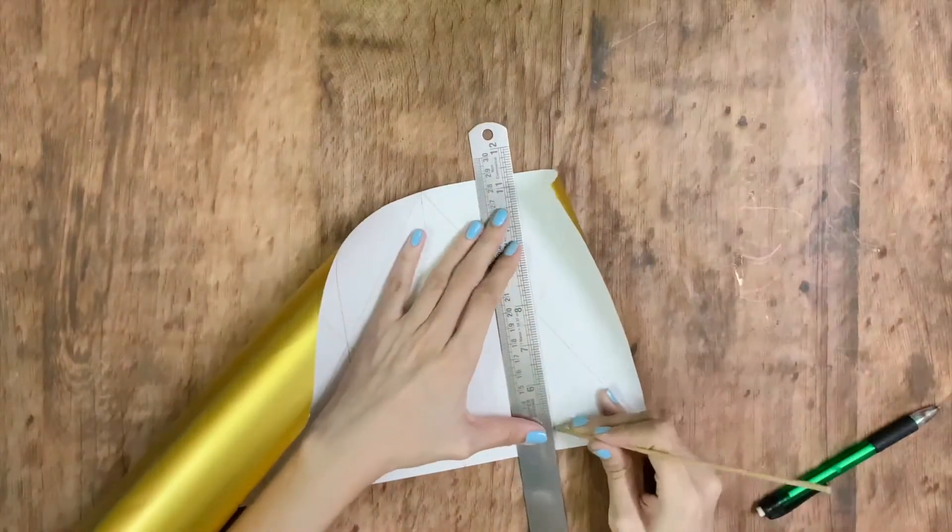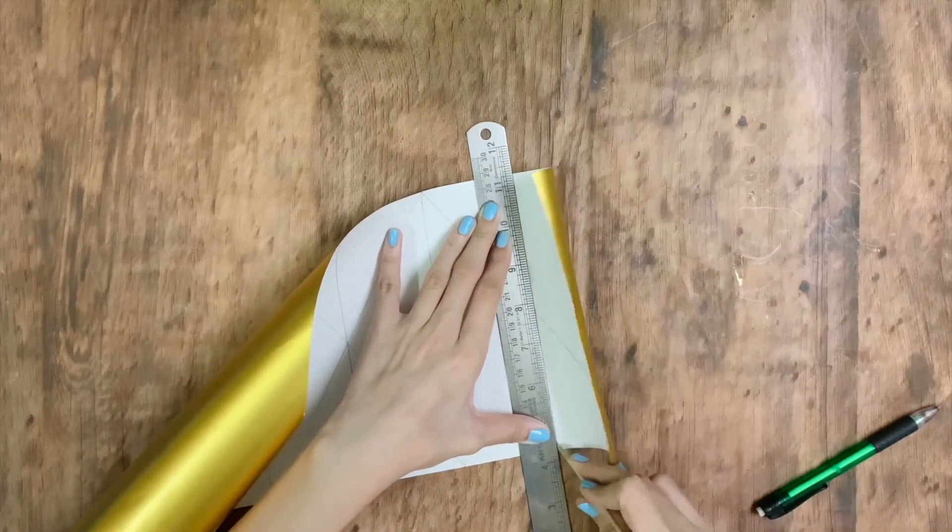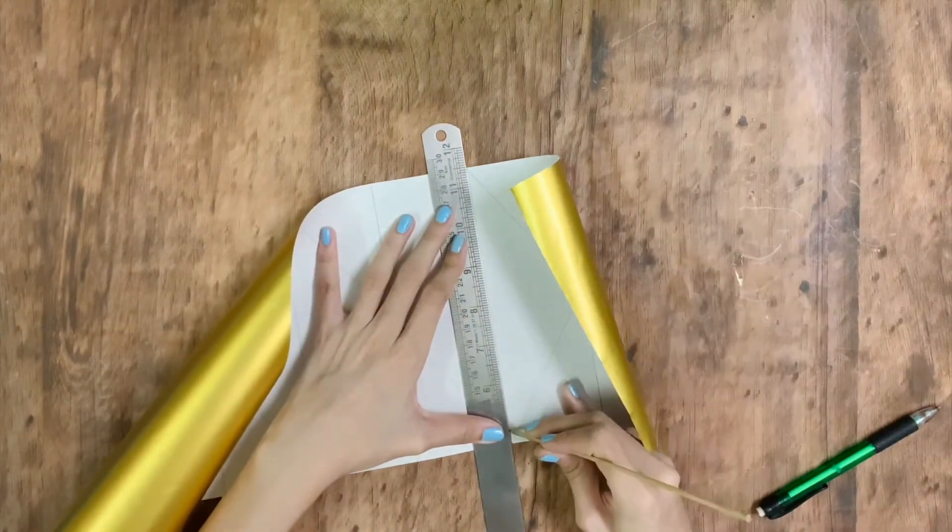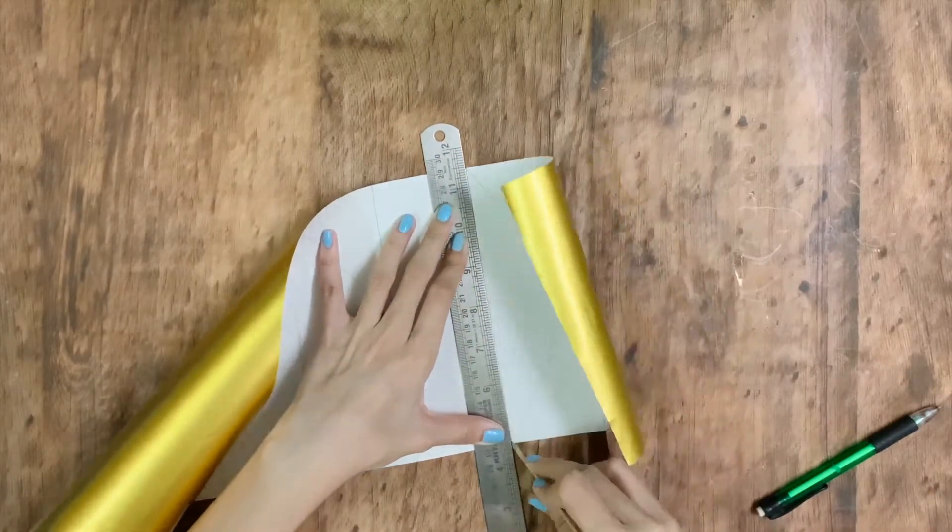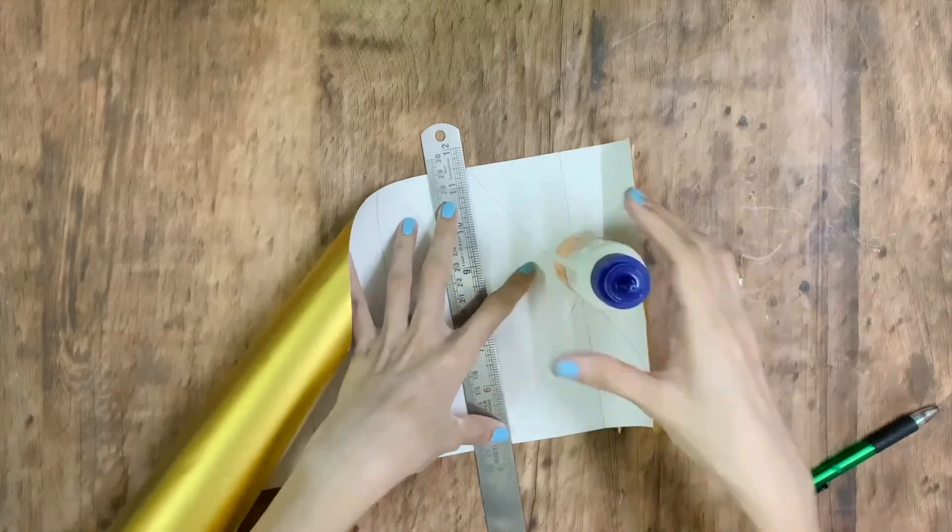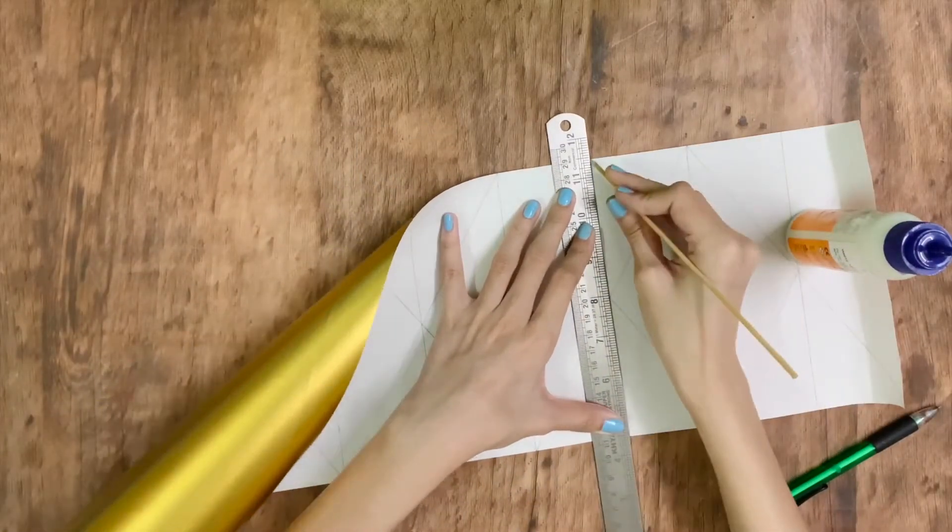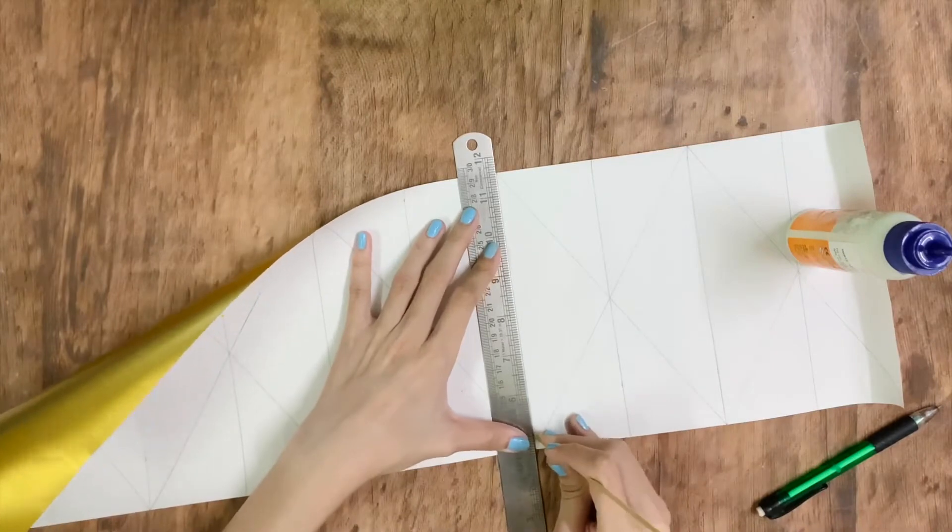Once all your lines are drawn, score all the vertical lines. I've used a barbecue stick to help me score. You can either use a candy stick or the back of a sharp cutter. If not, you can just fold the paper using a ruler.